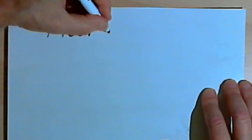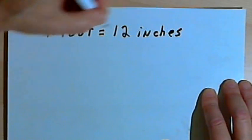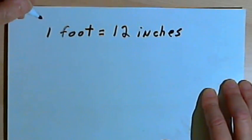One foot is equal to 12 inches. Another way to say this would be that there are 12 inches in one foot.